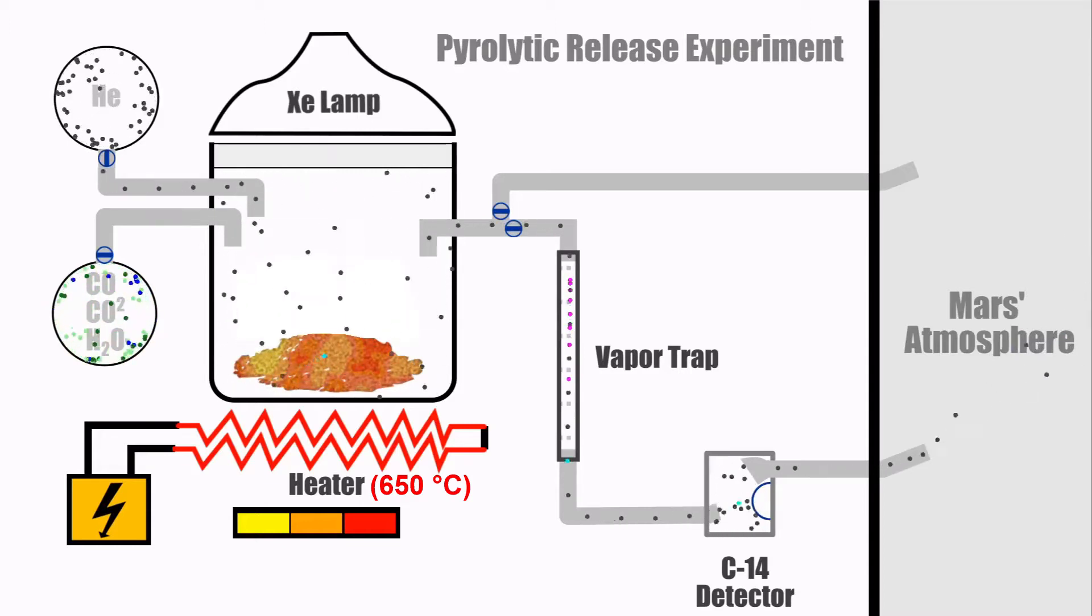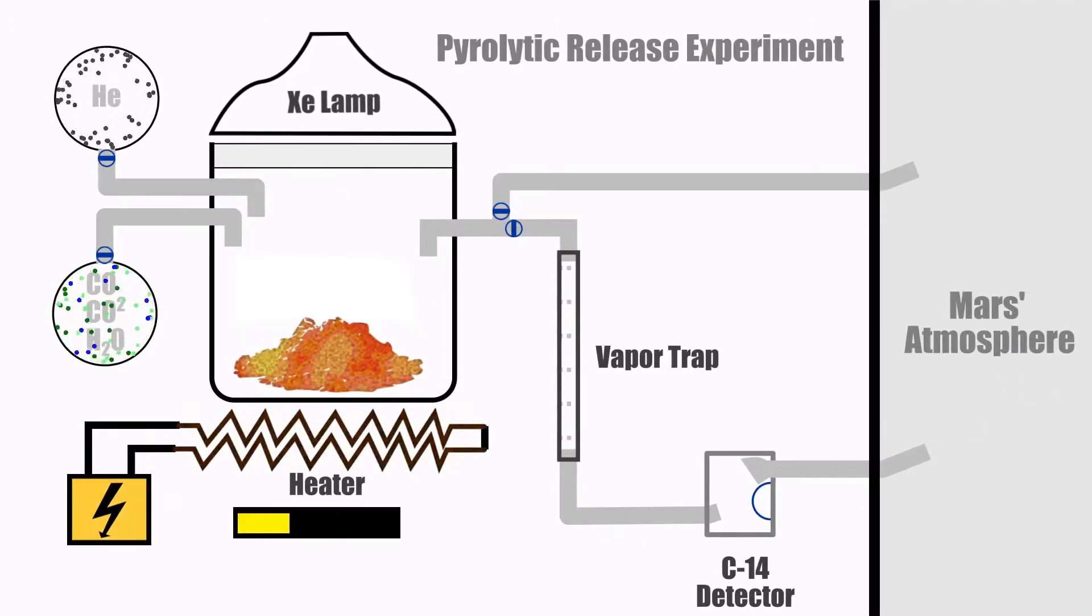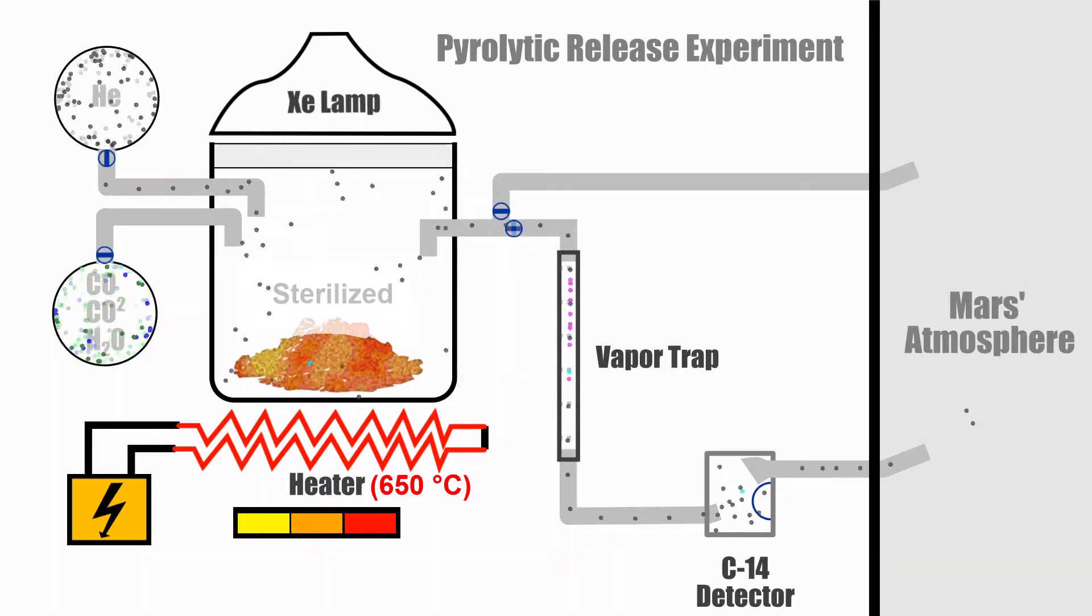To make sure the conclusion is justified, another sample from the same batch of soil is first sterilized by heating it to 120 degrees Celsius for three hours. After that it is introduced into the chamber like before.